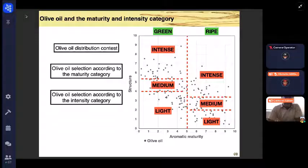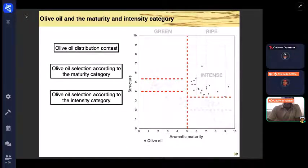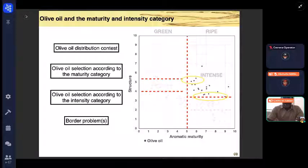In competition, oils are compared with each other within the same category. If we take the example of the intense ripe maturity category, all of the oils will compete together, and the goal is to determine the 20% that are deemed to be the best with the fruitiness score. For example, oils with a structure at the intense-medium limit will be compared with oils with a more intense structure and a greater fruitiness score. These oils will be disadvantaged in the ranking. This is the problem.